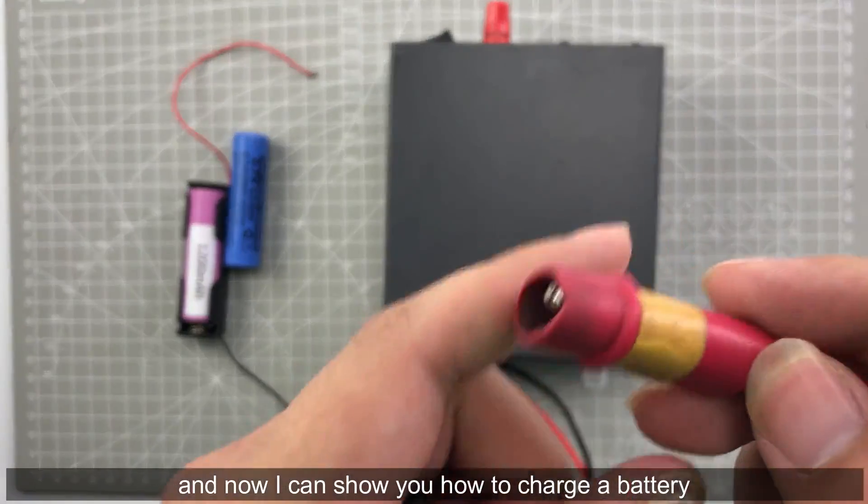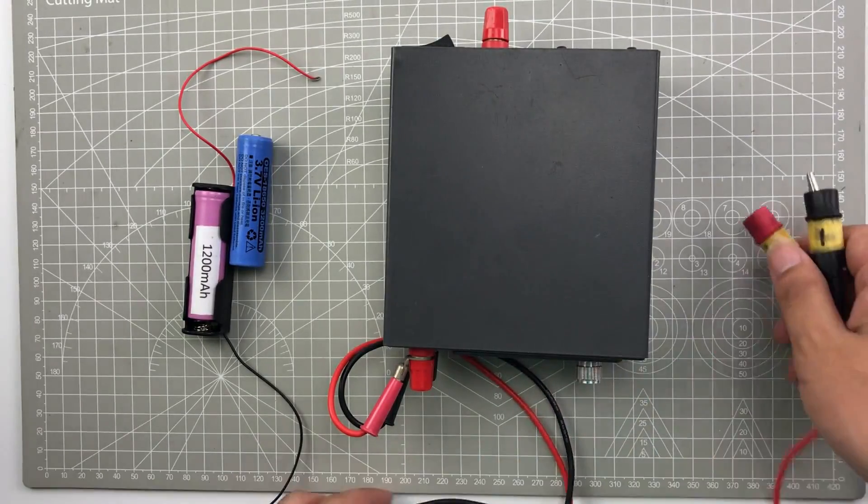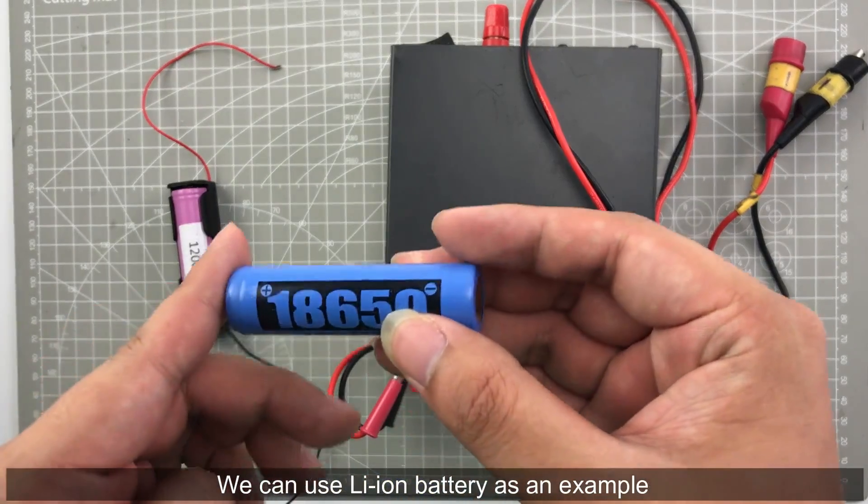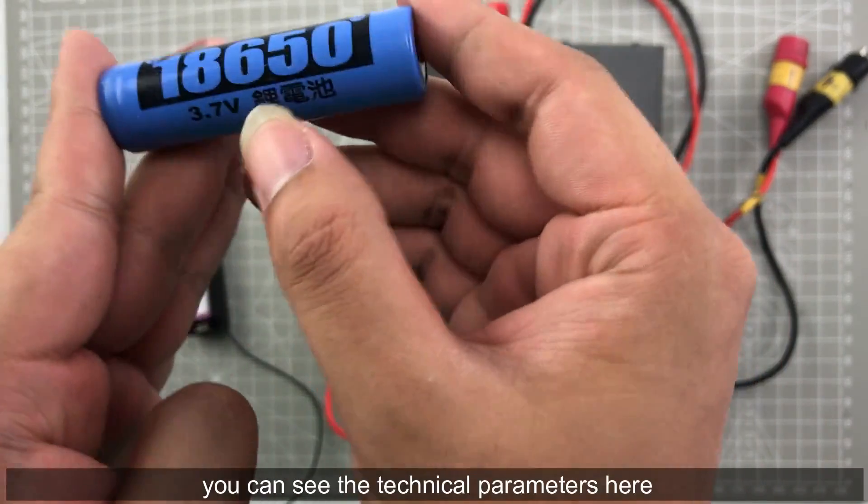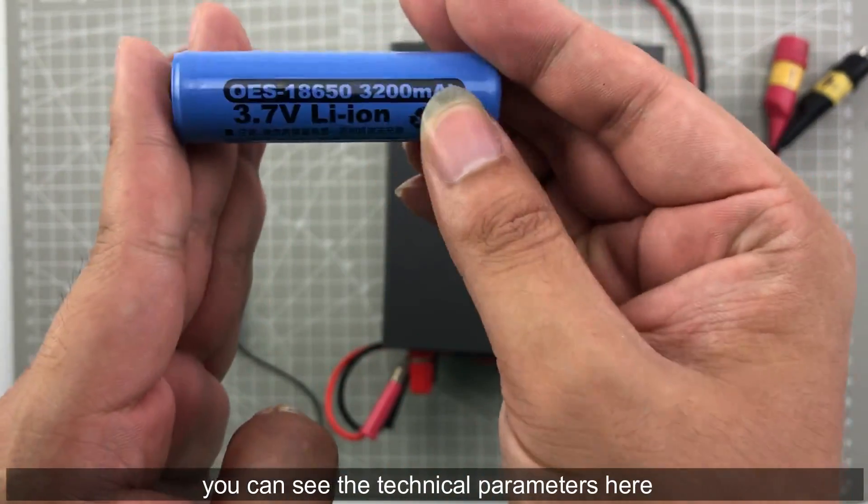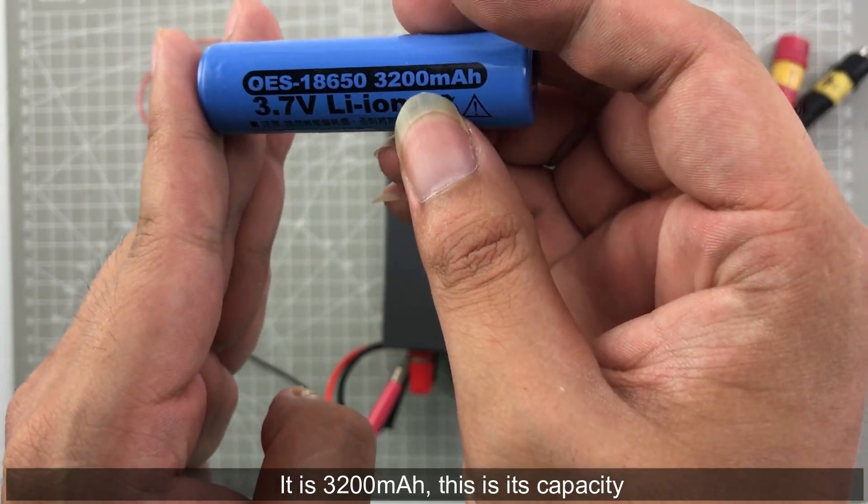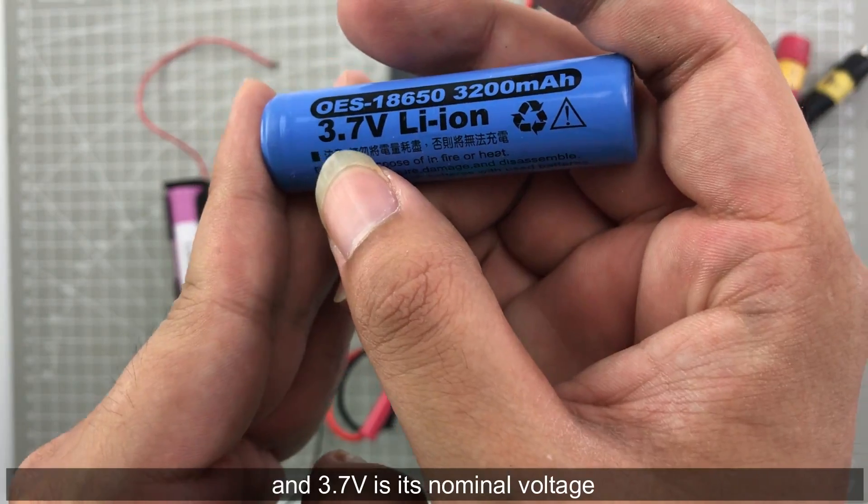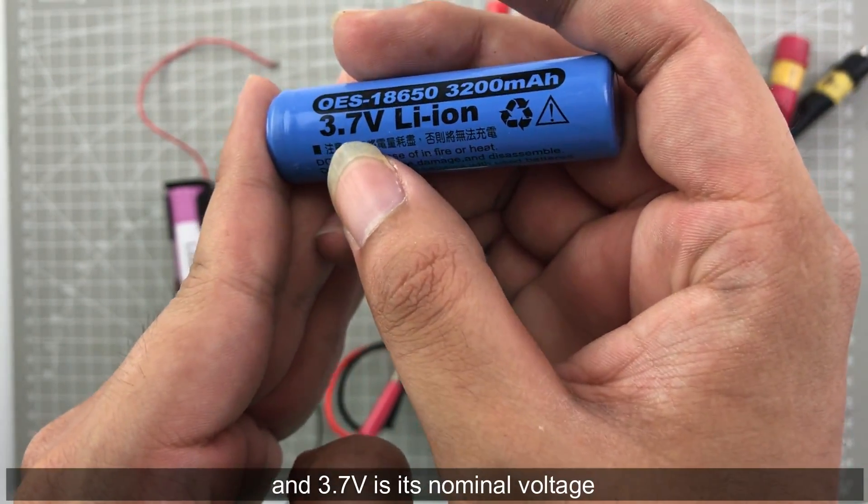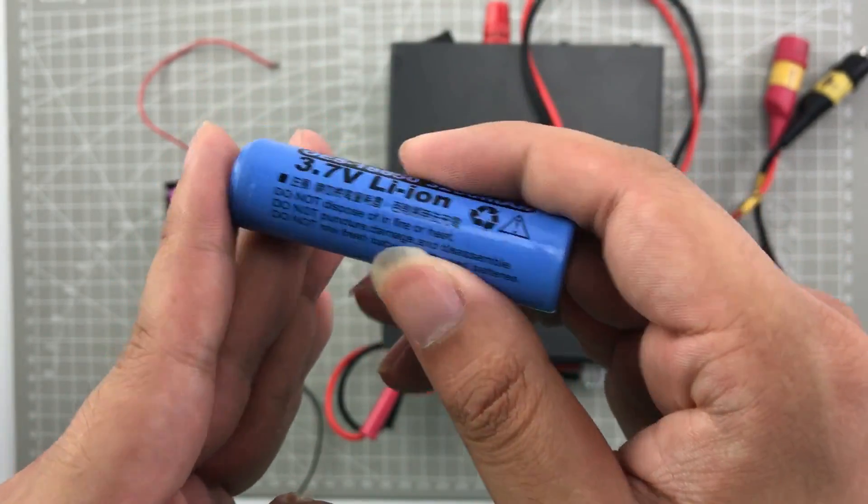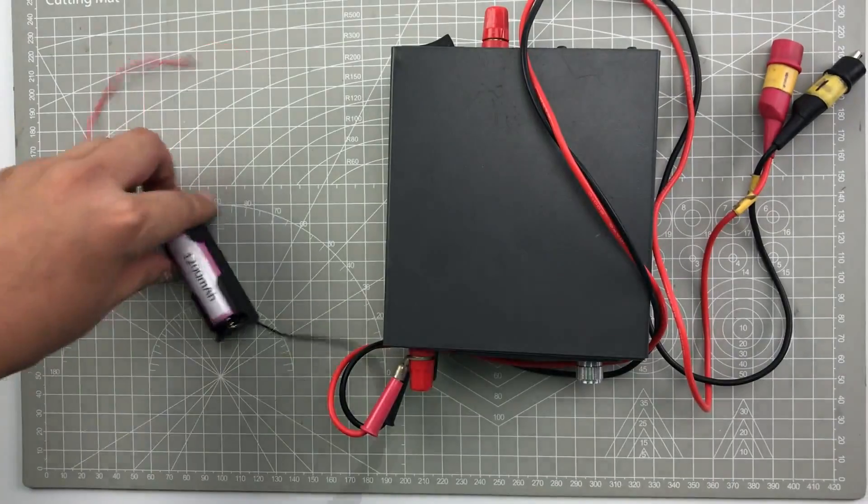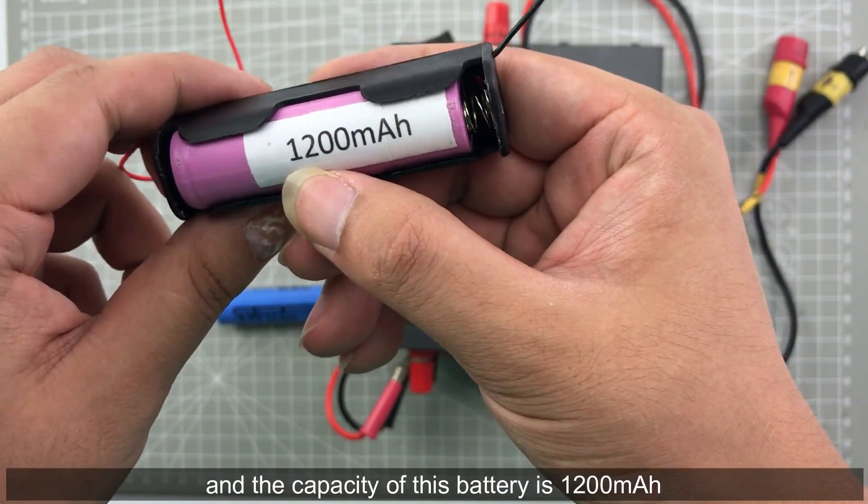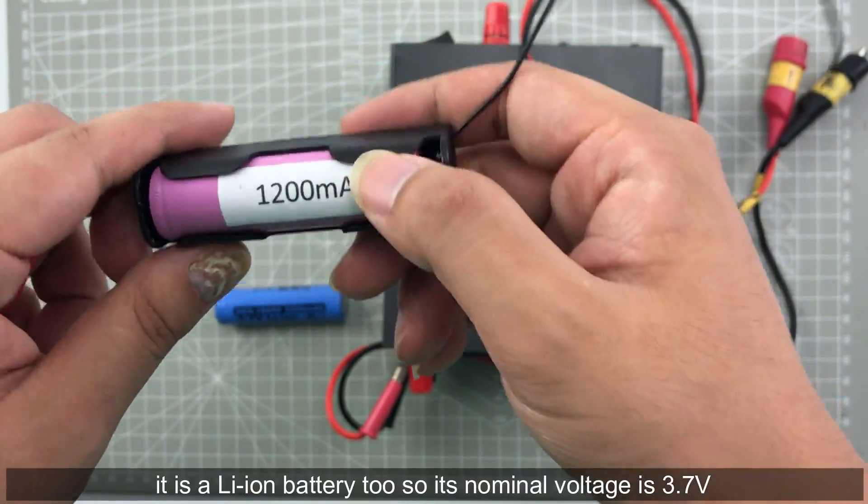Now I can show you how to charge battery. First we use a lithium battery as an example. You can see the technical parameters here: 3200 milliamp hour, this is its capacity, and its nominal voltage 3.7 volt. And there's a capacity of this battery is 1200 milliamp hour and it is a lithium battery so the nominal voltage is 3.7 volt.